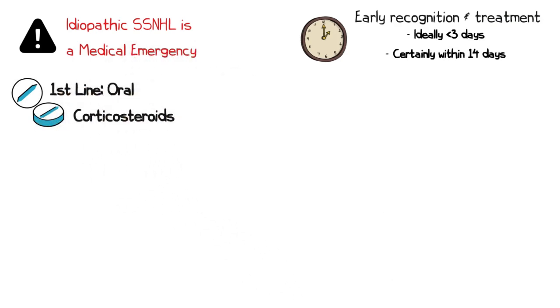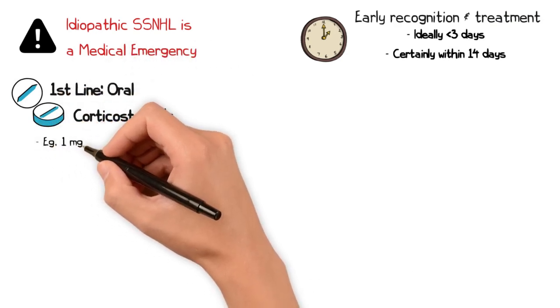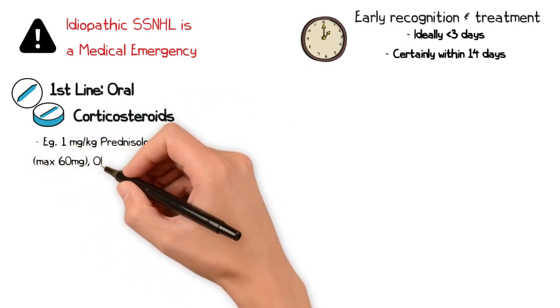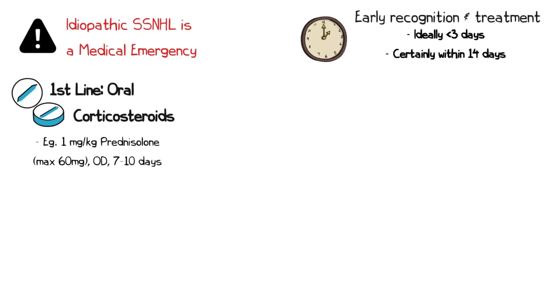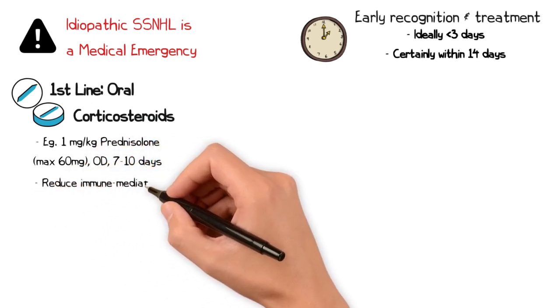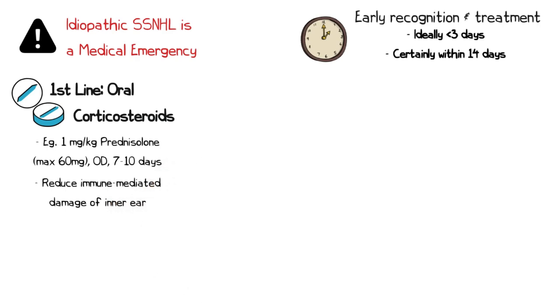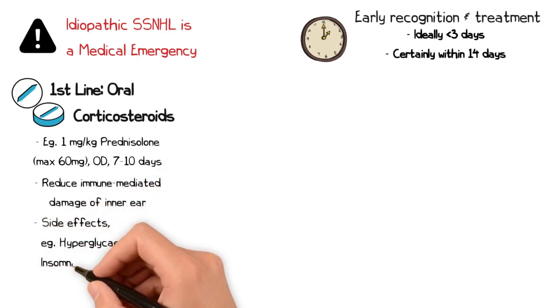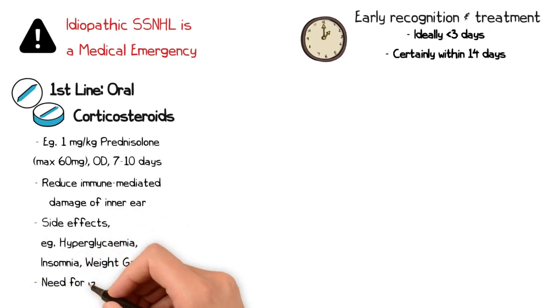Oral corticosteroids are the first line of treatment, and a common regimen involves high dose prednisolone at 1 mg per kilogram to a maximum of 60 mg once daily for 7 to 10 days. Steroids help to reduce the inflammation and immune-mediated damage in the inner ear. A patient should be counseled on possible side effects, including hyperglycemia, insomnia, and weight gain, and should be covered with gastric protection.